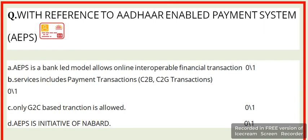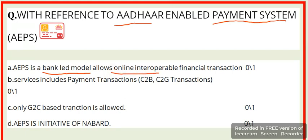With reference to Aadhaar Enabled Payment System (AAPS) options: AAPS is a bank-led model that allows online interoperable financial transactions.